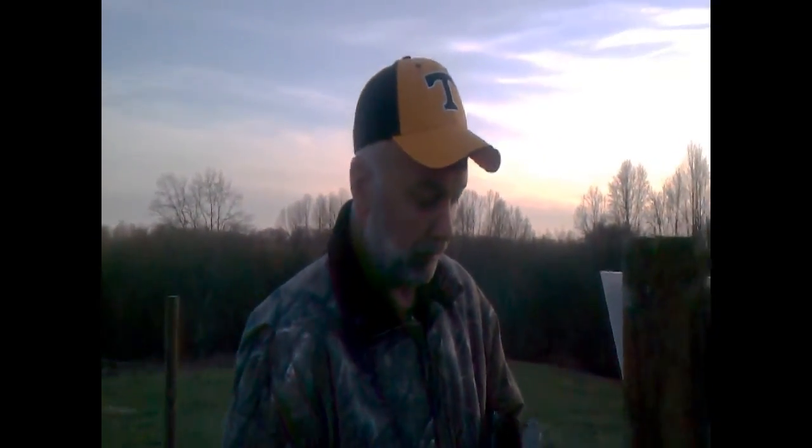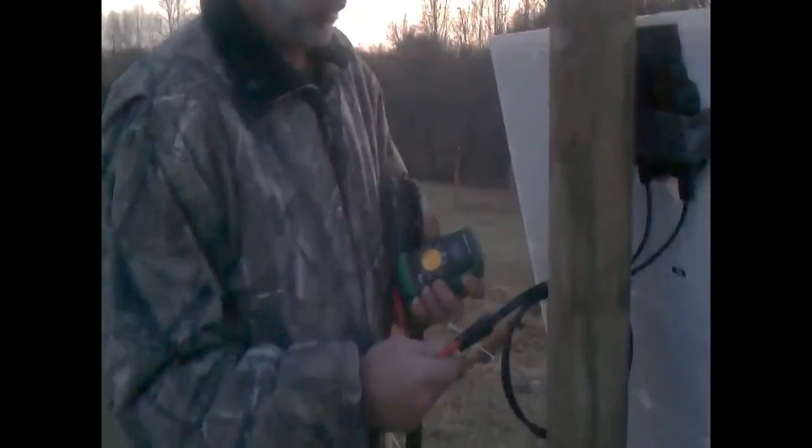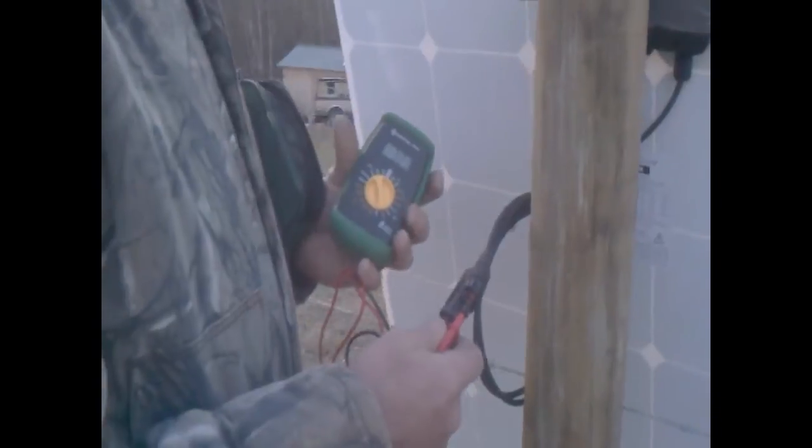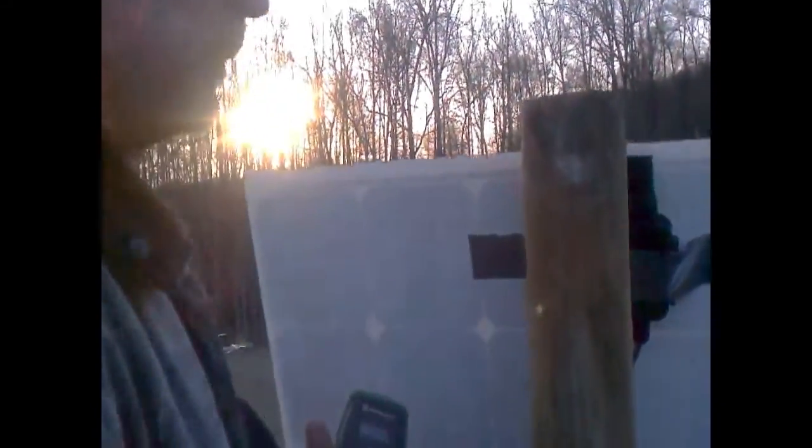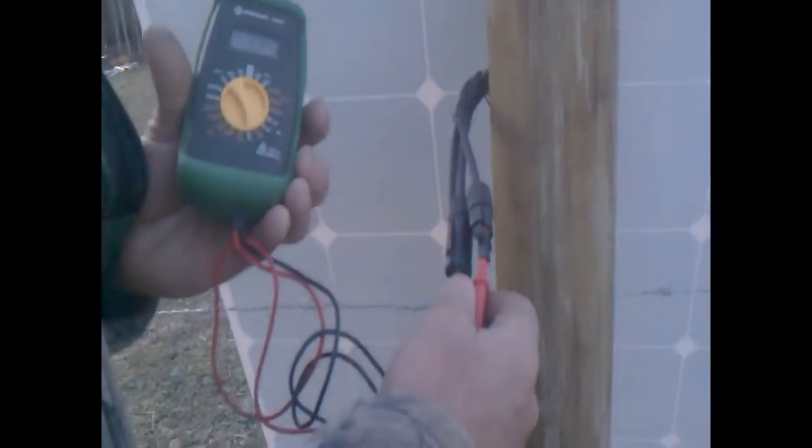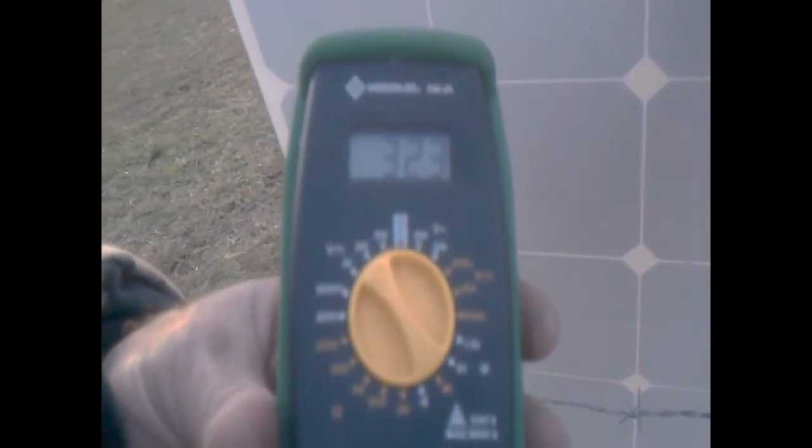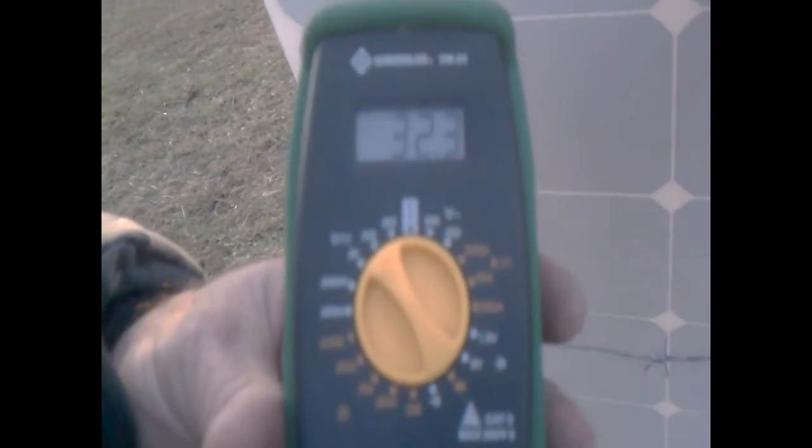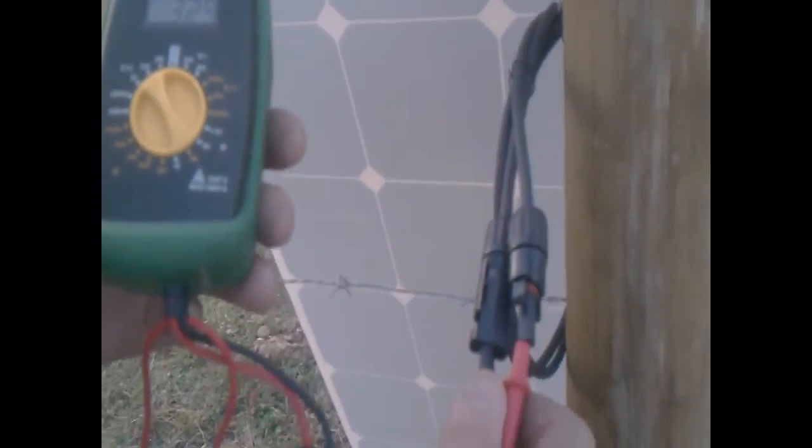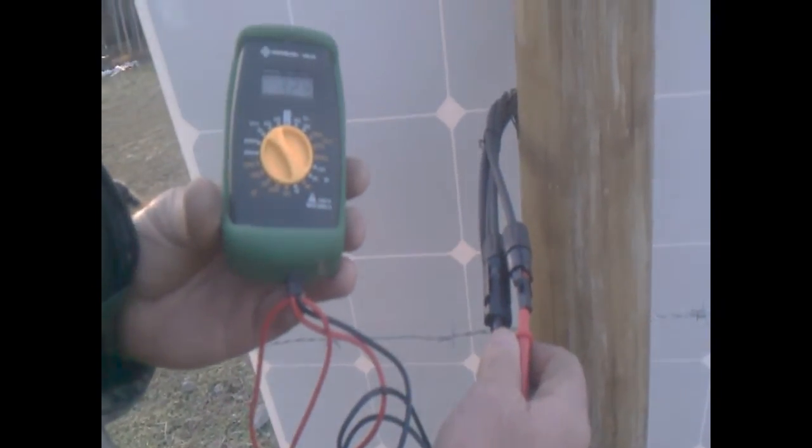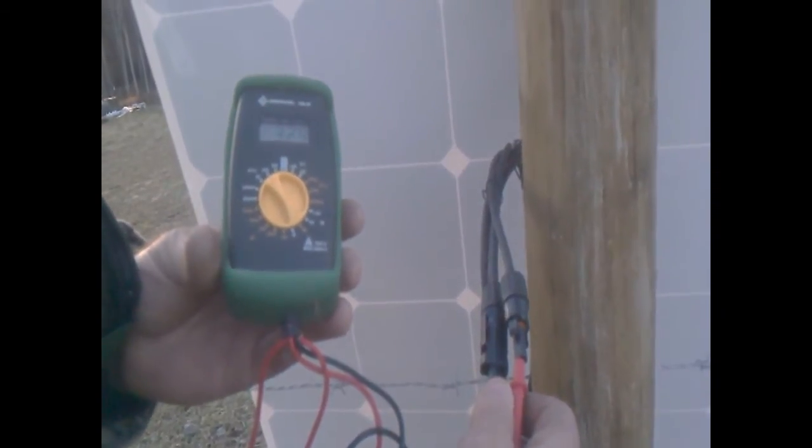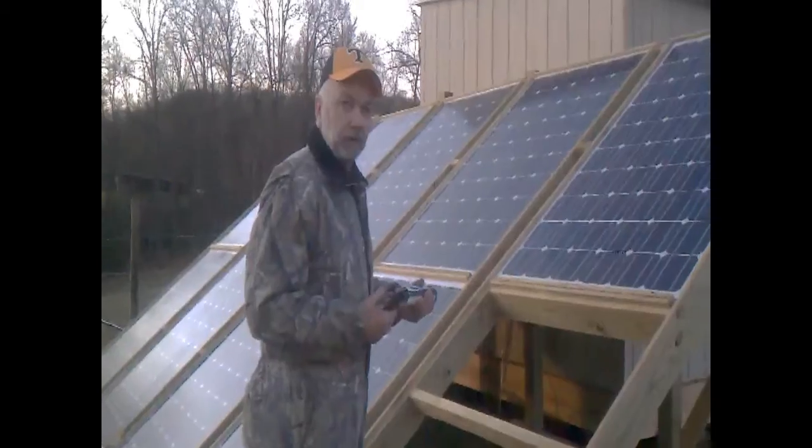We're checking our open circuit voltage. And we just set the panel up here against the fence post. And the sun's going down but we're still getting enough light to get a reading. And this one is putting out 32.3 volts. And it's about 30 minutes before sundown. So it's actually in mostly shade right now. So it looks like this panel is going to work very well.